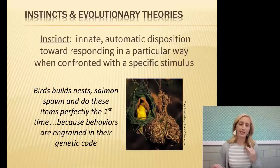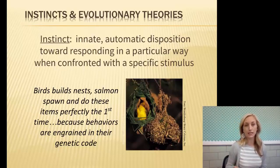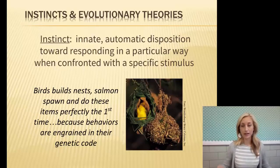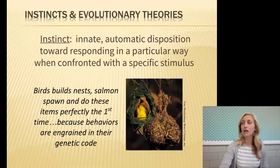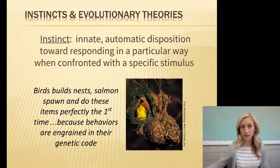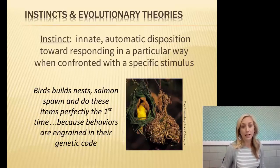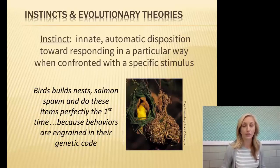The first theory is instincts and evolutionary theory. An instinct is the innate, automatic disposition toward responding in a particular way when confronted with a specific stimulus — you do not have to learn this; an animal is born knowing how to do it. What makes this evolutionary is that these behaviors are genetic. A genetic mutation will continue in a species if it helps them survive, so birds build nests and salmon spawn perfectly the first time because these behaviors are ingrained in their genetic code.